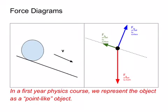So in junior physics or your first year physics class we pretty much just think of, we shrink our objects down to a point-like object.